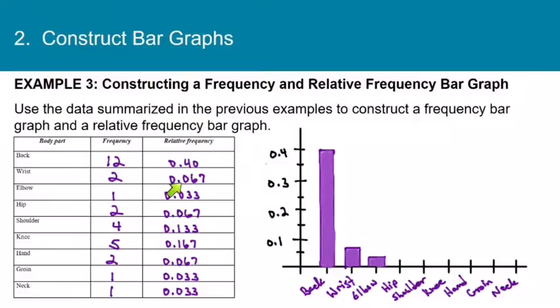And the next one is 0.067, so that's the same as the second one. And after that, 0.133. And then 0.167. And then 0.067, that's this height again. And 0.033 is this height again. And so there is our relative frequency bar graph.